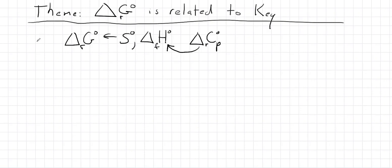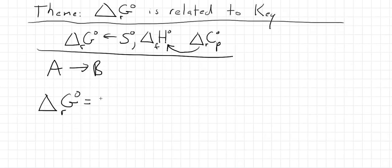So let's look at a reaction. We'll just take a little simple reaction, we'll say we have A and it goes to B. And we know the delta G standard is equivalent to the molar standard Gibbs function for the product minus the reactant A. And what does this mean?